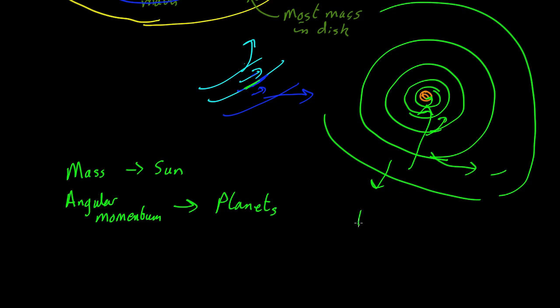But the angular momentum is actually mostly in the planets. Remember angular momentum is mvr. The planets have a very small mass compared to the Sun, but they're much further out, and they've got higher velocities. So in fact, this term overpowers that term, and most of the angular momentum is in the planets.